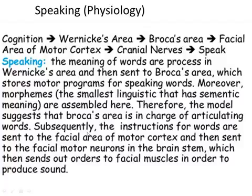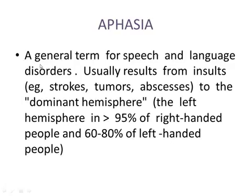Subsequently, the instructions for words are sent to the facial area of the motor cortex and then to the facial motor neurons in the brain stem, which send orders to the facial muscles to produce sound. Aphasia is a general term for speech and language disorders, usually resulting from insults like strokes, tumors, or abscesses to the dominant hemisphere — the left hemisphere in greater than 95% of right-handed people and 60 to 80% of left-handed people.